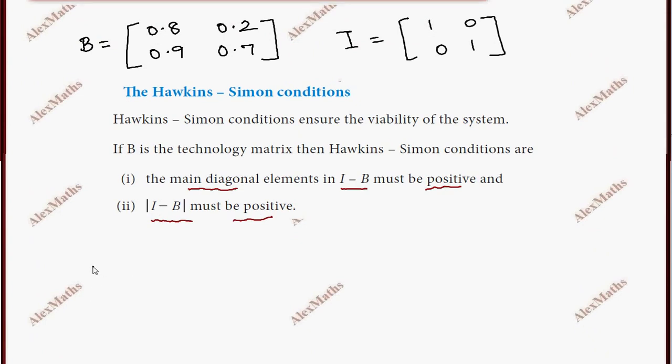So I minus B: I equal to 1, 0, 0, 1 minus B equal to 0.8, 0.2, 0.9, 0.7.